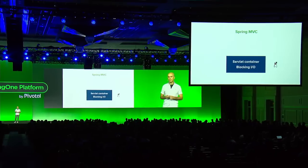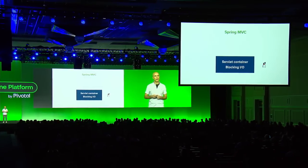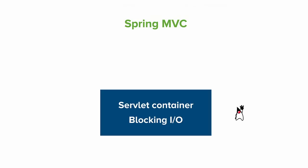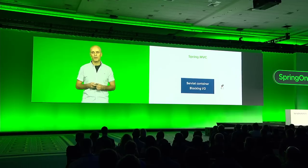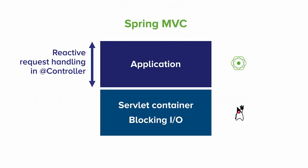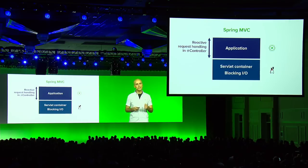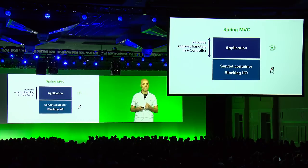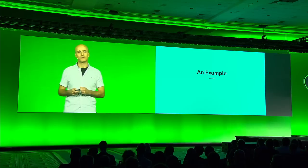In Spring MVC, we have the Servlet API, and the framework was built originally for a synchronous blocking programming model. However, for a long time we've had the ability to process requests asynchronously. We can decouple from the Servlet container thread and do all of the handling in the controller independent of it. That means we can use reactive handling in the controller, which is something Spring MVC supports from version 5.0. Let's take a look at an example to make this more clear.